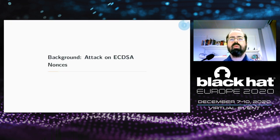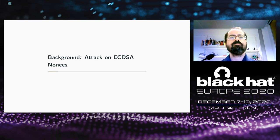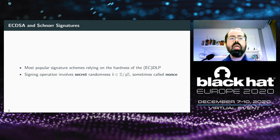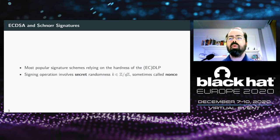ECDSA and Schnorr signatures are among the most popular signature schemes relying on the hardness of the discrete logarithm problem for security. Modern instantiations use elliptic curves for efficiency. In both schemes, the signing operation involves a random value k, sometimes called a nonce, to randomize the signatures. Calling this value a nonce is a major understatement because it needs to remain secret for a long time; otherwise, the security of the signature scheme is completely undermined.